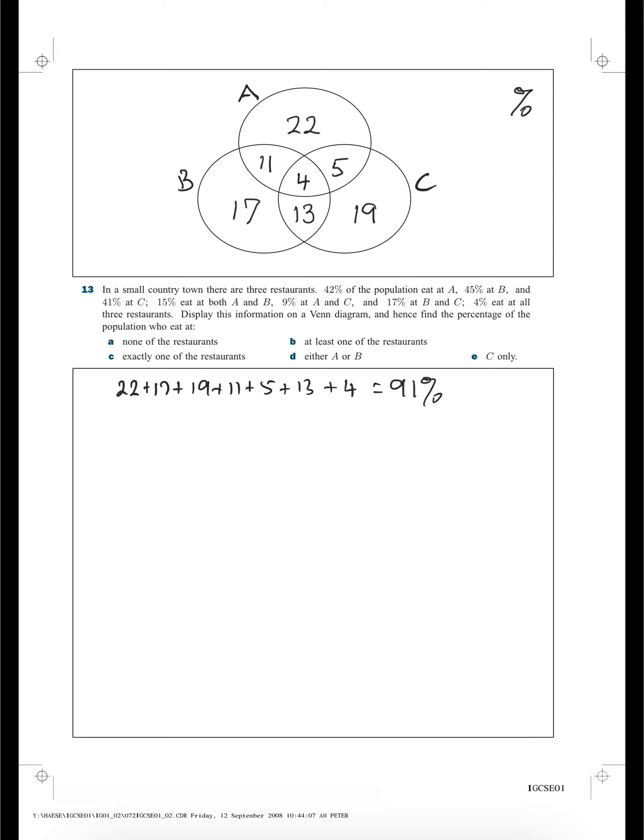But the question is, this question A says none of the restaurants. So the answer for A must be 100 minus 91, which equals 9%.